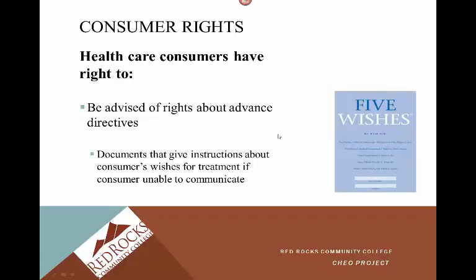Healthcare consumers have the right to be advised of their rights about advanced directives. One example is 'Five Wishes,' which is one information source. These are documents that give instructions about consumers' wishes for treatment if the consumer is unable to communicate. This is really important — the person needs to have their plan of care outlined if they reach a point in their disease process where they're unable to do that for themselves.